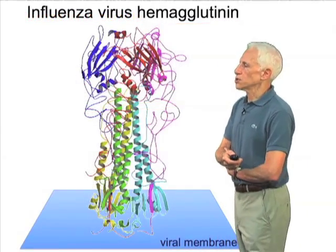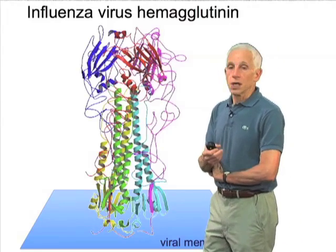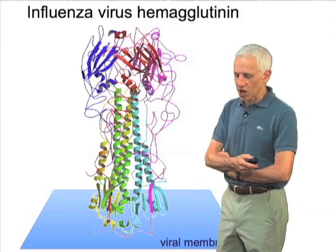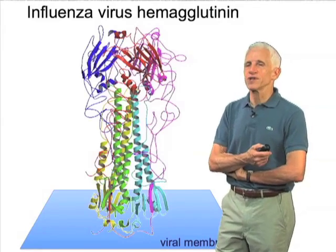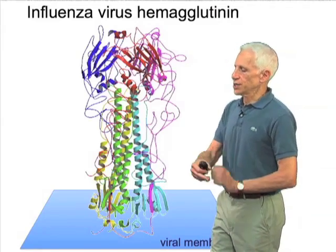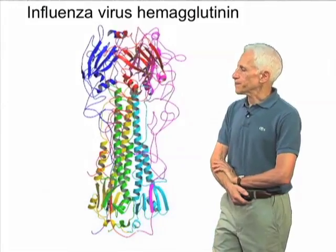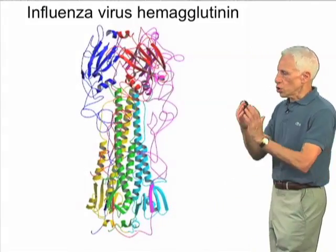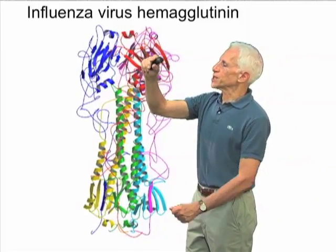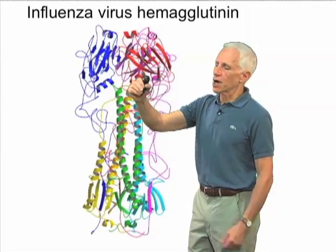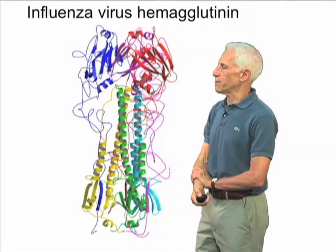The hemagglutinin, shown here, is a spike-like structure. Its molecular design doesn't look anything like that of the envelope protein of dengue virus. It's a stalk-like structure, and long alpha helices project the receptor binding site at the top, about 120 or 130 angstroms away from the membrane.